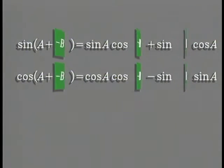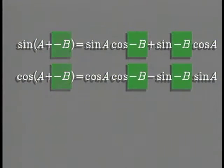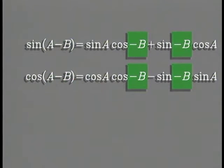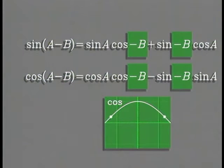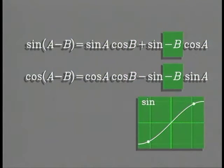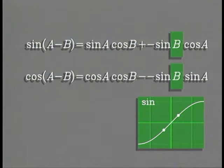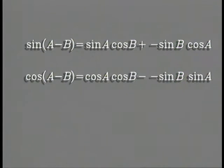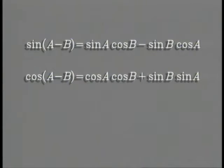When we replace b by negative b, the addition formulas are called subtraction formulas. Remember, the cosine of negative b is equal to cosine b, and the sine of negative b is the negative of sine b. The subtraction formulas for sines and cosines are the same as the addition formulas with just an algebraic sign change.